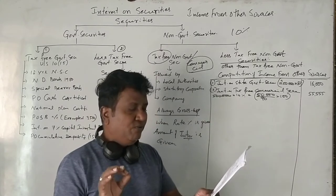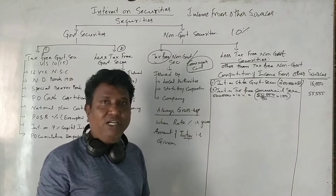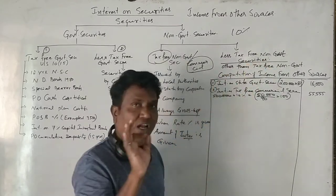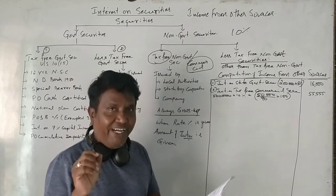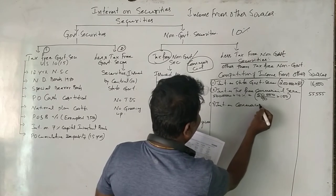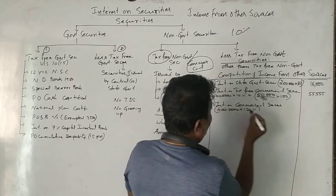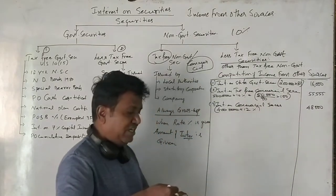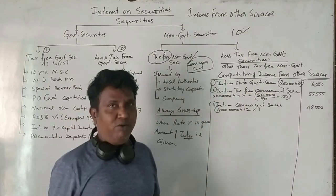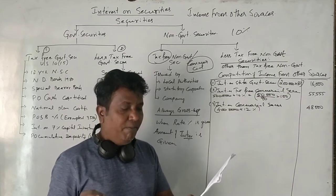Third point is rupees 4 lakhs, 12% commercial securities. Commercial means non-government, but the word 'tax-free' is not given in the question. Since it is less-than-tax-free non-government securities, the rate of interest is given. So we take interest on commercial securities: on 4 lakhs at 12% = 48,000, which is fully taxable. Since it is less-than-tax-free commercial securities, no TDS is deducted — they pay the gross amount in full. So no grossing up needed.